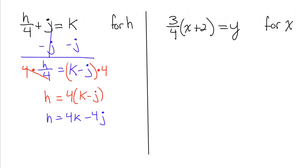How do we undo multiplication by a fraction? We flip and multiply. So we're going to multiply both sides of this equation by four over three. On the left side, four over three times three-fourths cancels out, leaving me with x plus two, which now has been broken free from the parentheses. On the right, I have y over one times four over three, which is four y over three.